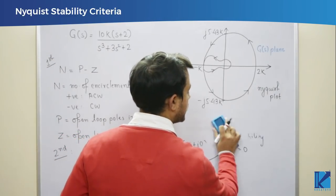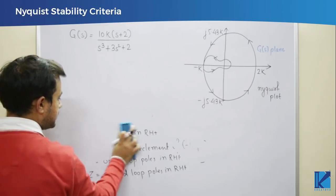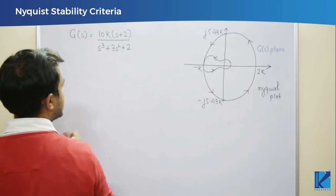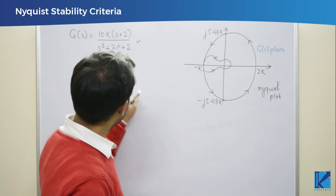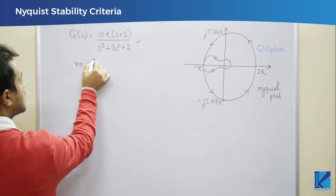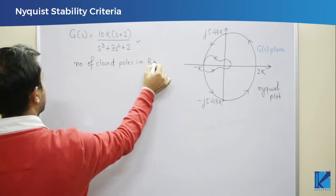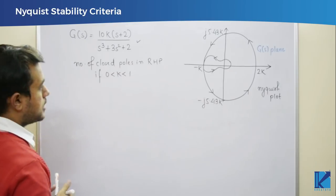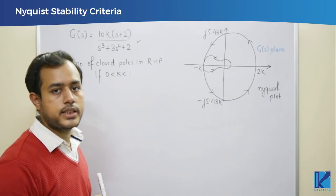Let us look at a problem from GATE 2017 ECE paper based on Nyquist criteria. A transfer function was given, along with its Nyquist plot. Based on these two things, the problem asked for the number of closed loop poles in the RHP if k lies between 0 and 1. Since it is asking about closed loop poles, we have to check the encirclement of the −1 + j0 point.